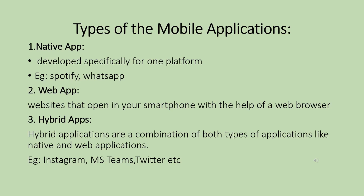The third one is hybrid apps. Hybrid means both — that is, native and web combined. Hybrid applications can run on the device. They are usually written in HTML5, CSS, JavaScript, and similar technologies. Developers don't need to create separate code for each platform — they can write general code and deploy it everywhere. That is an advantage of hybrid applications.